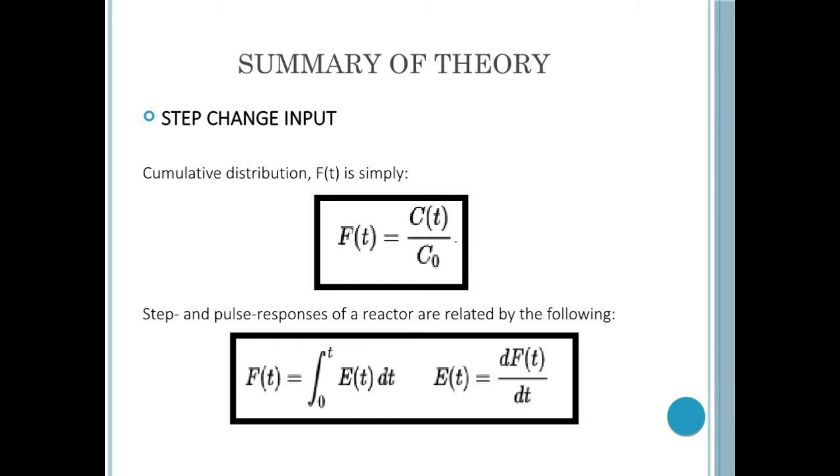For step change input, the cumulative distribution denoted by F as a function of t is simply C as a function of t divided by C0. While for step and pulse responses of a reactor are related by the following: F as a function of t is equivalent to the integration of E as a function of t dt, and E as a function of t is equivalent to the derivation of F(t) divided by dt.